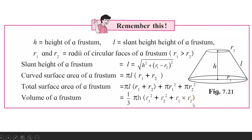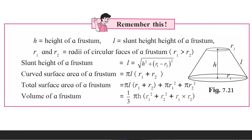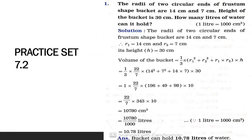Students, you need to memorize these formulae. As we solve problems it will get easier. Let us go to Practice Set 7.2, Question 1. The radii of the two circular ends of a frustum-shaped bucket are 14 cm and 7 cm. The height of the bucket is 30 cm. How many liters of water can it hold? Given: 1 liter = 1000 cm³.